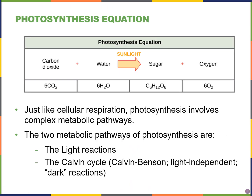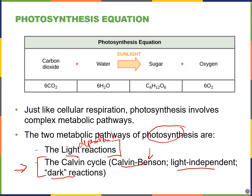There are actually two metabolic pathways that comprise photosynthesis. The first are known as the light reactions, sometimes called the light-dependent reactions, and these directly use light. The second set of pathways are called the Calvin cycle, also known as the Calvin-Benson cycle, or sometimes the light-independent pathway or dark reactions. This is a misnomer because even though the second pathway does not directly require light, it cannot work without light, because the Calvin cycle depends on the products generated from the light reactions.